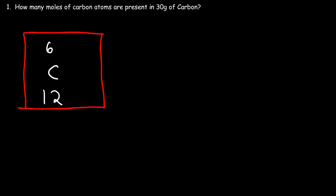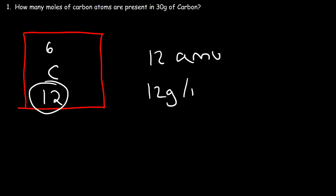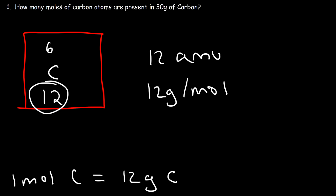What you need to use is the larger of these two values. The atomic mass, which is 12 AMU — atomic mass units — is also the molar mass. It's 12 grams per mole. What this means is that one mole of carbon atoms has a mass of 12 grams. This is your conversion factor — what you need in order to convert from grams to moles.